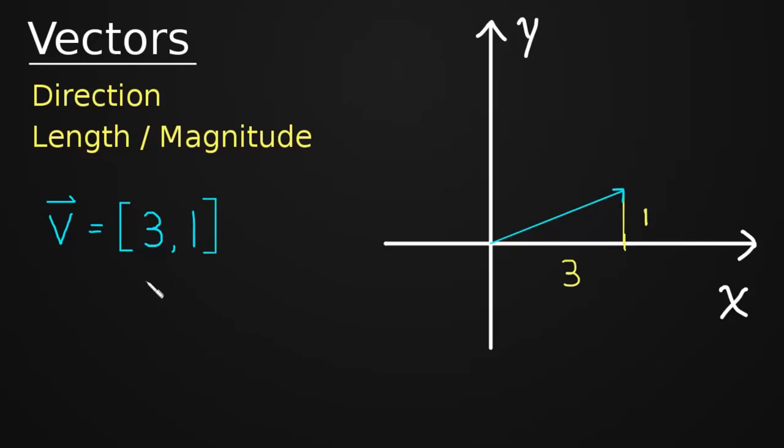So again, this is the X component and the Y component. And now anyone in the world looking at this vector, V equal to [3, 1], can go ahead and draw that vector if they want to. They know exactly which vector we're talking about when we write that.